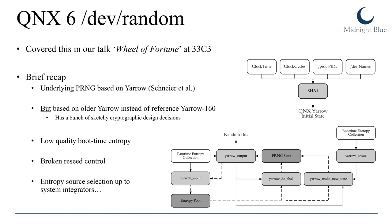As a recap of our previous work, the original QNX 6.6 /dev/random PRNG was based on Yarrow — not the reference Yarrow but an earlier version — and had some sketchy design issues. The biggest problems were a complete lack of seed control, low-quality boot-time entropy, and entropy source selection that was left to system integrators. We showed examples of how things can go wrong when system integrators don't care about it and the OS itself doesn't provide a proper PRNG.